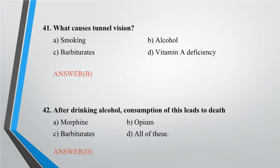Question 41: What causes tunnel vision? A. Smoking, B. Alcohol, C. Barbiturates, D. Vitamin A deficiency. Answer: B.